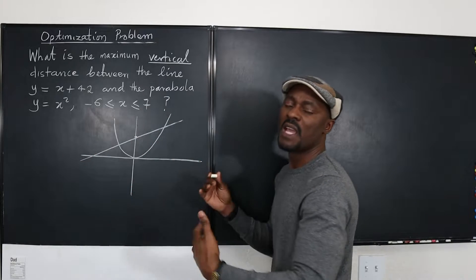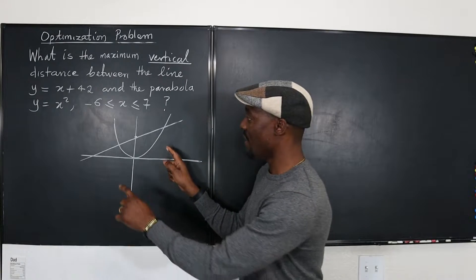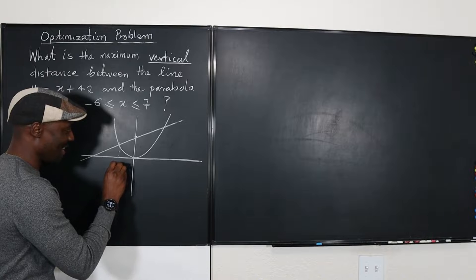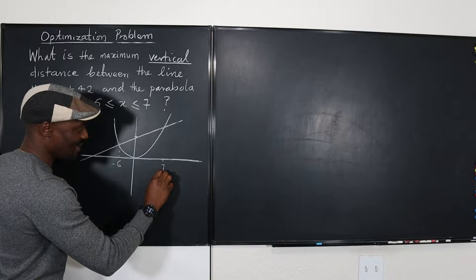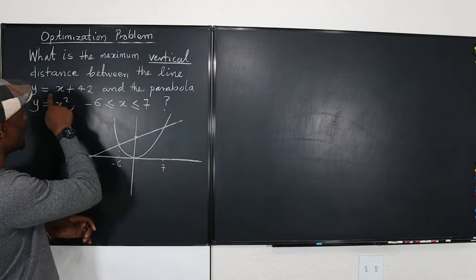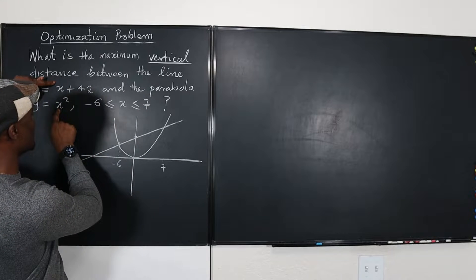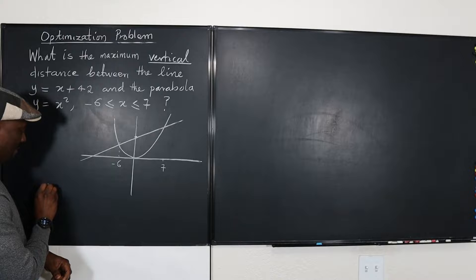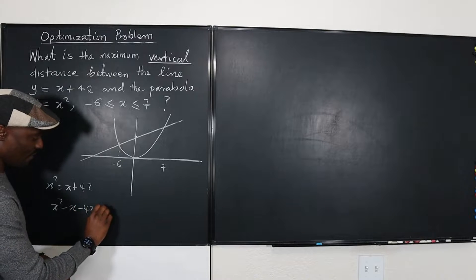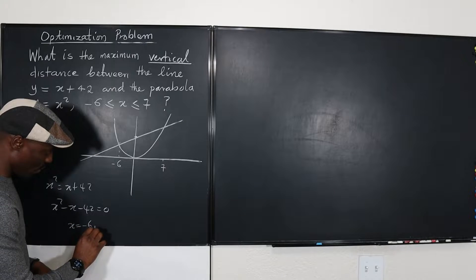The points where these two graphs meet are actually at negative six and seven. So we're saying this point is at negative six and this point is at seven. To find this, you set the two functions equal: x squared equals x plus 42, which gives x squared minus x minus 42 equals zero. If you solve this quadratic equation, you end up with x equals negative six or seven.